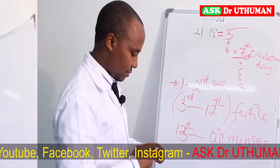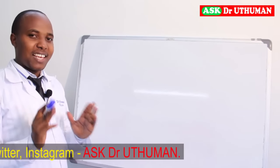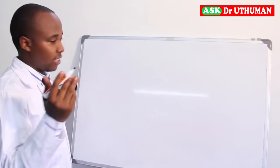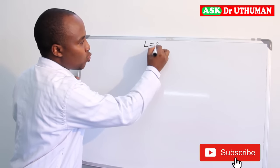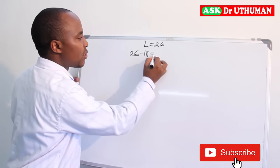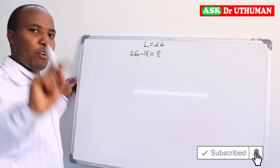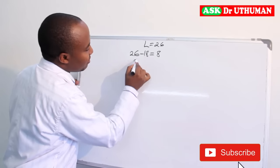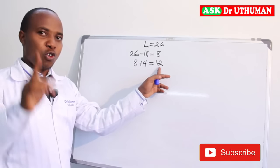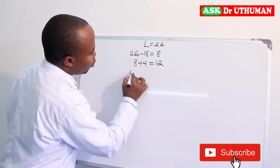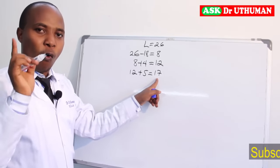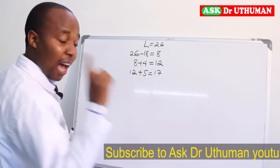We can give another example for clarity. Now let's look at a 26-day cycle. If you have a 26-day cycle, we take L as 26. Therefore, 26 minus 18 equals 8 — so the eighth day is the beginning of your fertile days. Eight plus four gives 12, therefore 12 is your ovulation day. Now, 12 plus 5 equals 17, so the seventeenth day is the last day of your fertile period.